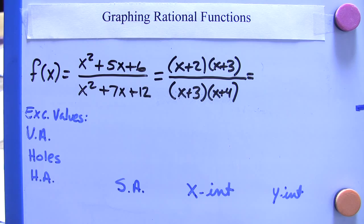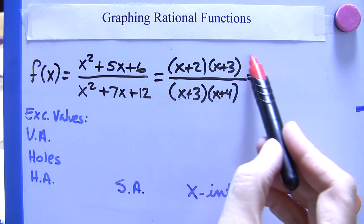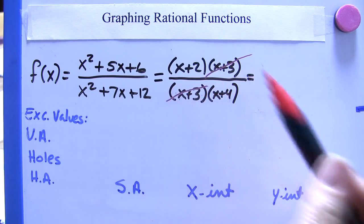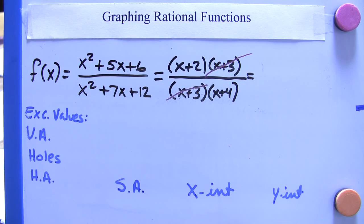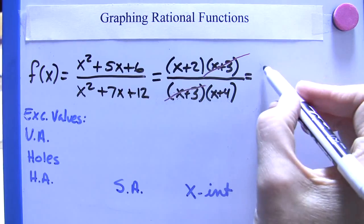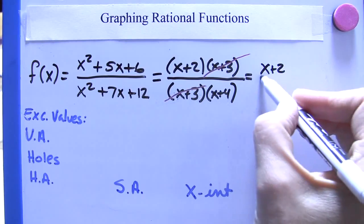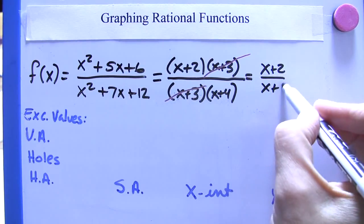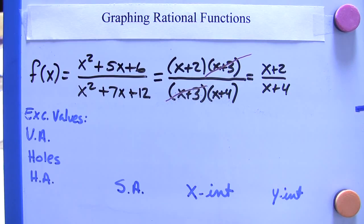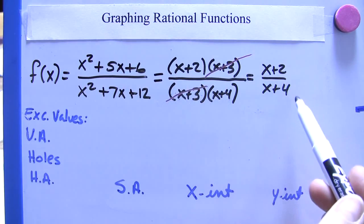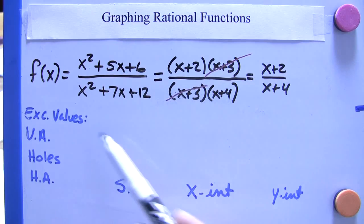And x plus 3 times x plus 4 gives us the denominator. Now we have to simplify a little more. We can reduce like terms here. This and this are the same. So after reducing, we're left with x plus 2 over x plus 4.